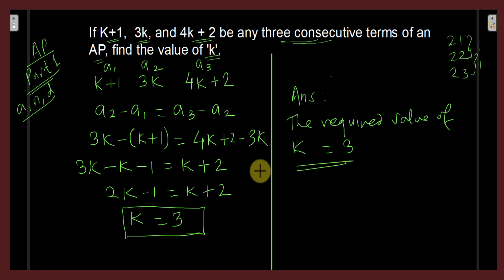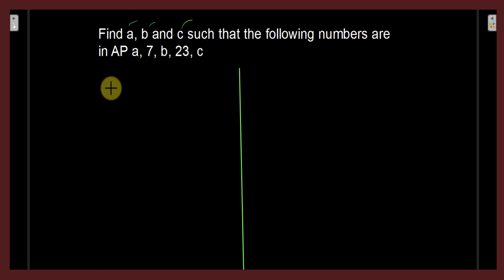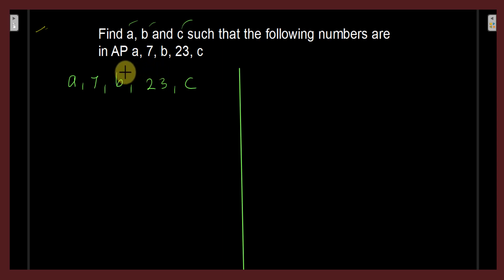Now let us see the second question on the screen: find a, b, and c such that the following numbers are in AP — a, 7, b, 23, and c. Here the given AP is a, 7, b, 23, c and we have to find the values of a, b, and c. Since this is an arithmetic progression, the difference between consecutive terms is always the same — the common difference is constant.